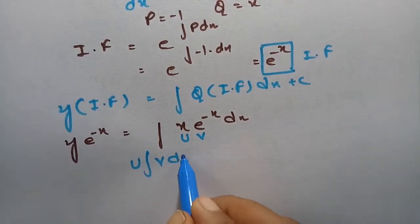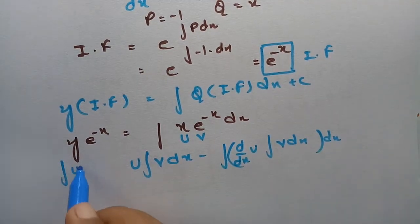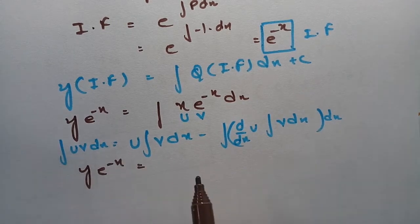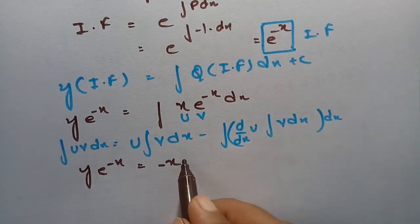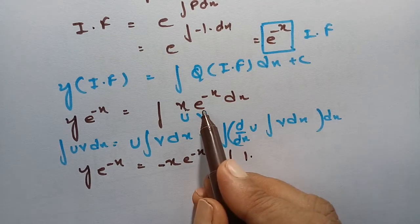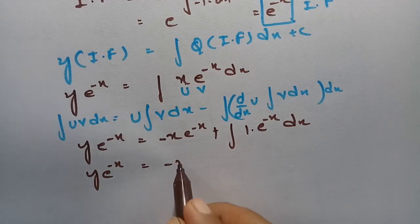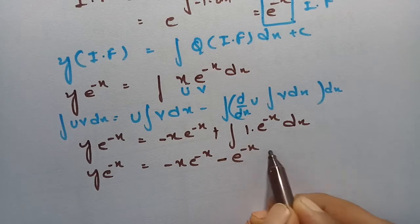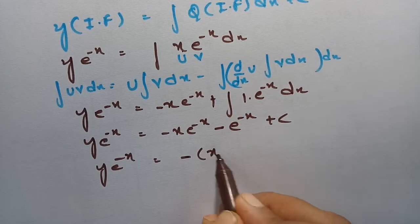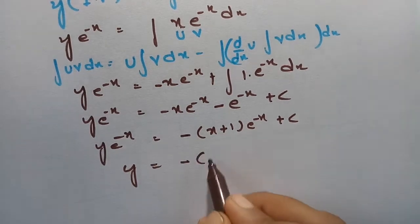We apply integration by parts using the formula ∫u·v dx = u·∫v dx − ∫(u' · ∫v dx) dx. Taking u = x and v = e^(−x), we get y · e^(−x) = x · (−e^(−x)) − ∫1 · (−e^(−x)) dx = −x·e^(−x) − e^(−x) + C.